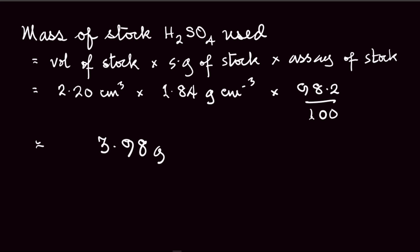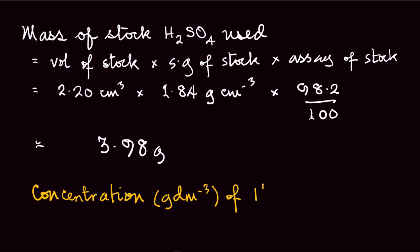This means the concentration in grams per dm³ of the H2SO4 we will be working with is 3.98 g/dm³, because we are dissolving 2.20 cm³ in 1 dm³ of water. The next step is to calculate the concentration in moles per dm³ of the acid using the concentration in g/dm³ and the molar mass of the acid.